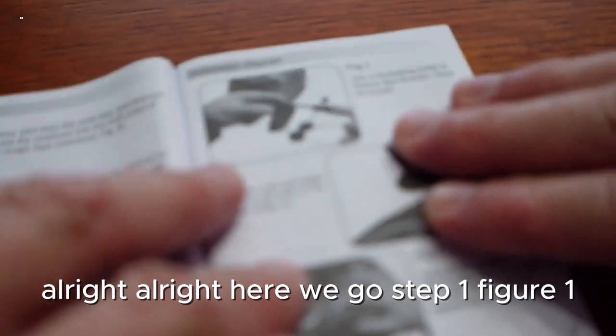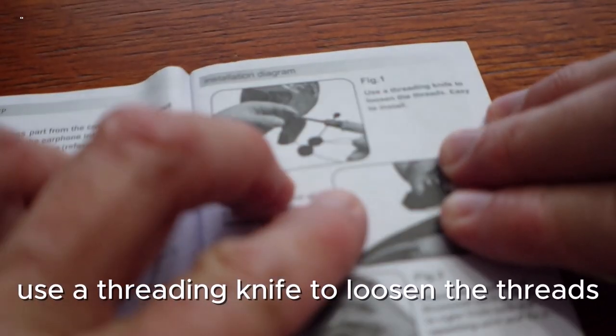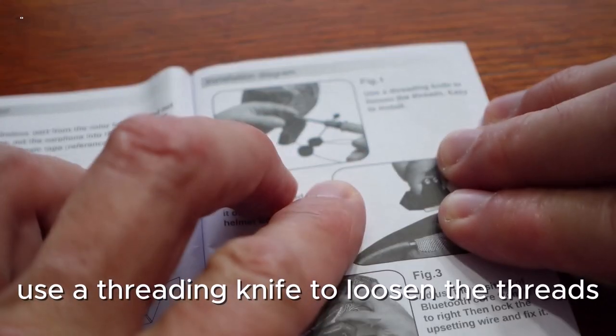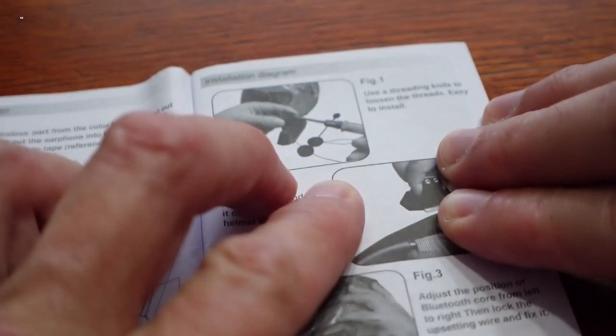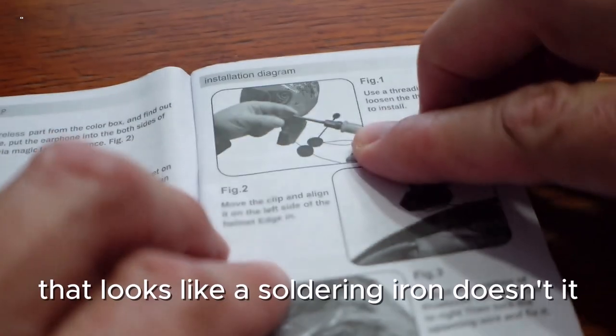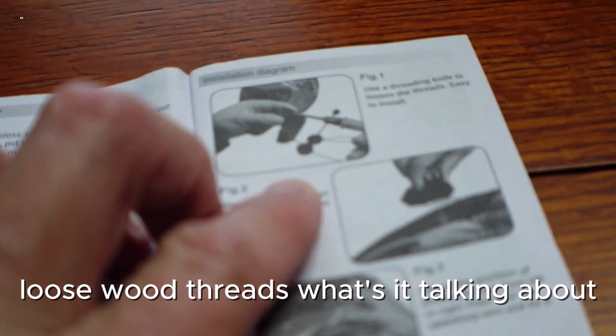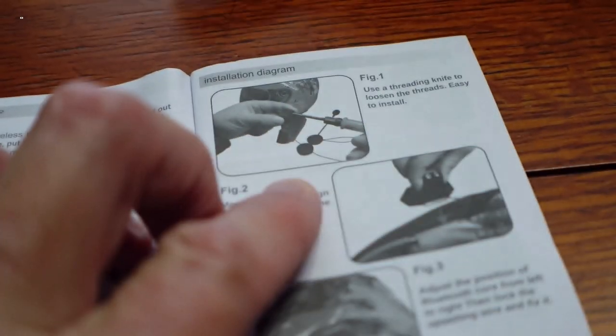All right, here we go. Step one, figure one: use a threading knife to loosen the threads. A threading knife? That looks like a soldering iron, doesn't it? Loosen what threads? What's it talking about? I have no idea.